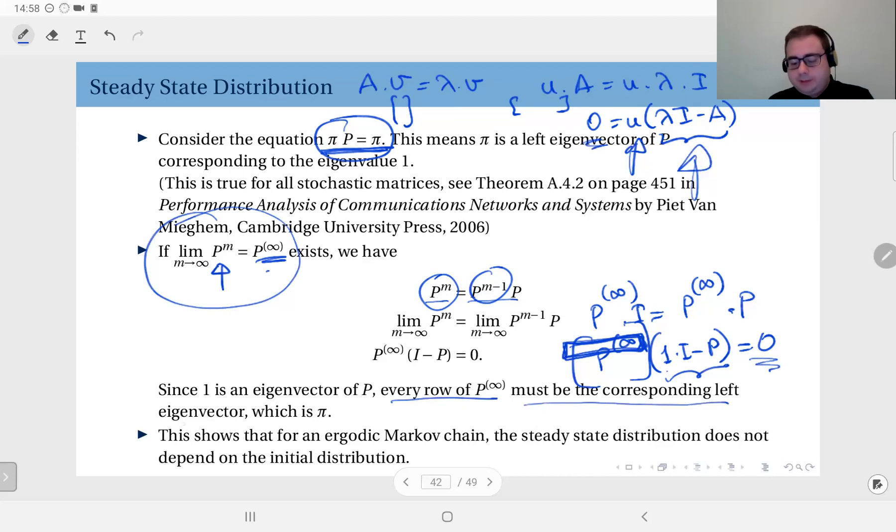So this also shows us that if this limit exists, every row of P∞, this limit must be equal to the corresponding left eigenvector, which is π, as we have seen earlier. Right? In the weather example, if you remember...